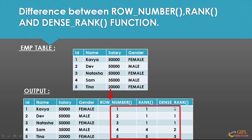Now if you look at the output of the DENSE_RANK function, this function, just like the RANK function, assigns the same rank where there is a duplicate or a tie. So in this case it assigns rank 1 for the three duplicate rows. And for the rows after the duplicate rows, it gives a rank of 2. It didn't skip any rank. This means the next row after the duplicate rows will have the consecutive rank. So that's the key difference between RANK and DENSE_RANK.